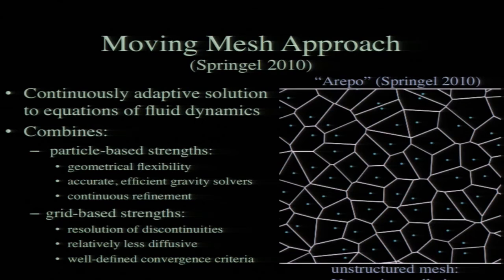I want to say a couple of things about the numerical method we're using, because it's not familiar in my field, although it's been used in other engineering applications. We have to do simulations that account for both dark matter and baryons. The dark matter is handled with an N-body treatment—collisionless particles that interact only gravitationally but can also interact gravitationally with the baryonic material. For the baryons, we treat them as a fluid and solve the equations of hydrodynamics to characterize what's happening to the gas. Because of the very large dynamic range, material will collapse from cosmological scales down to galactic scales, and we need to follow that accurately over many orders of magnitude.